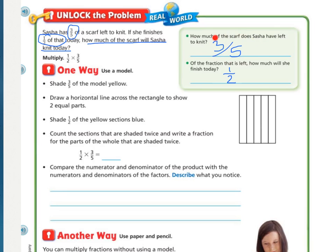In the green box, we have how much of the scarf does Sasha have left to knit? She has three-fifths left to knit. And then of that fraction, how much will she finish today? She's going to finish one-half of the three-fifths. That leads us to our numerical expression, or our multiplication sentence, one-half times three-fifths. One-half of three-fifths.